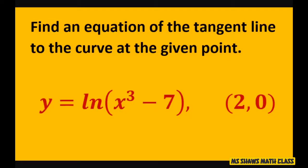Hi everyone, we're going to find the equation of the tangent line to the curve at the given point. The curve is y equals ln of x cubed minus 7, and our point is 2 comma 0.